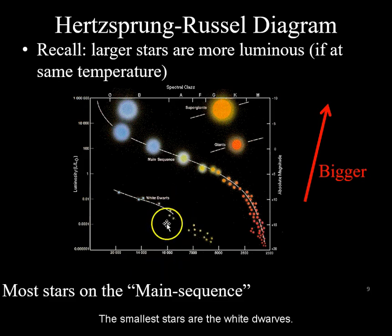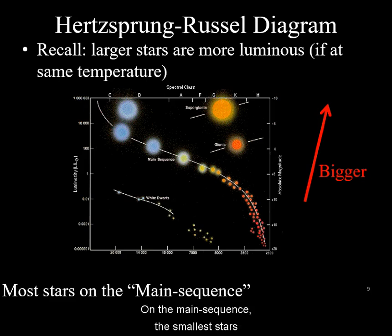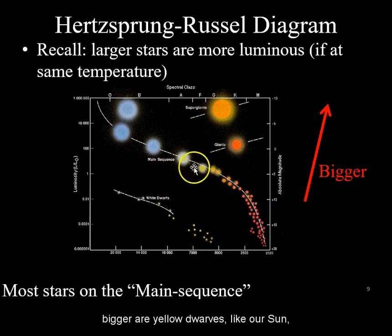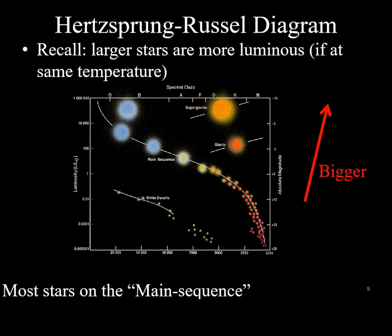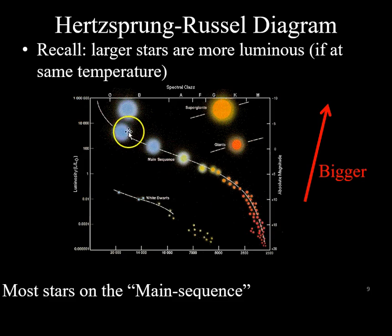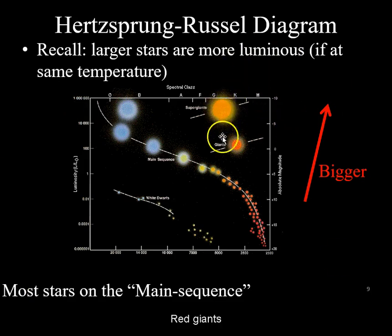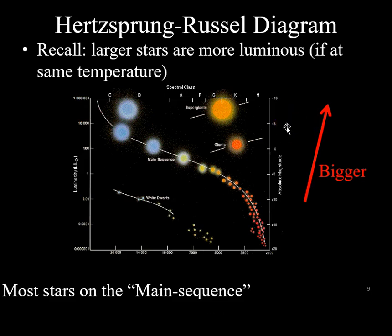The smallest stars are the white dwarves. On the main sequence, the smallest stars are the red dwarves, bigger are yellow dwarves like our Sun, and the biggest main sequence stars are blue giants. This correlates with mass on the main sequence — red dwarves are low mass and blue giants are the most massive. Red giants are the largest stars by size but not necessarily by mass; they are larger than blue giants in size.